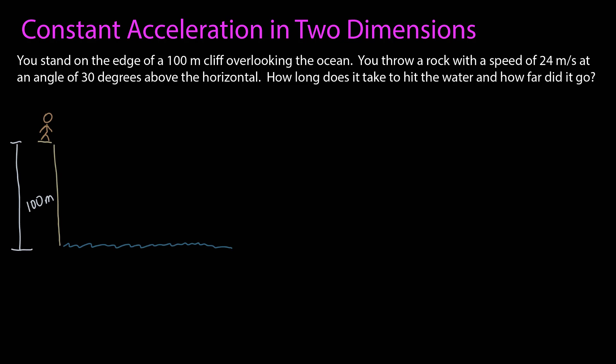As always, we start with a picture. So here's my person at the top of a cliff. The cliff is 100 meters tall. So a rock is thrown. I'm not told anything about how far above the ground the rock is when the rock is thrown. And the person is small compared to 100 meters. So I'm going to assume the rock left the point at the top of the cliff, 100 meters above the ocean. It's given a speed of 24 meters per second. And we were told that it was delivered at an angle of 30 degrees with respect to the horizontal.